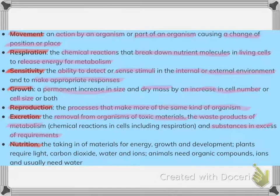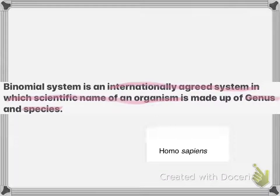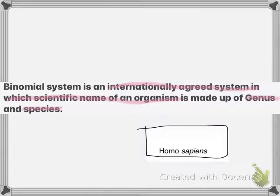For binomial nomenclature, the genus name starts with a capital letter and the species name is in small letters. Both are written in italics — for example, Homo sapiens.